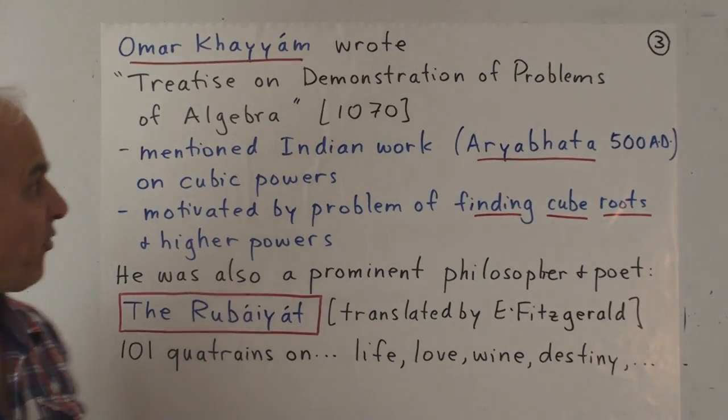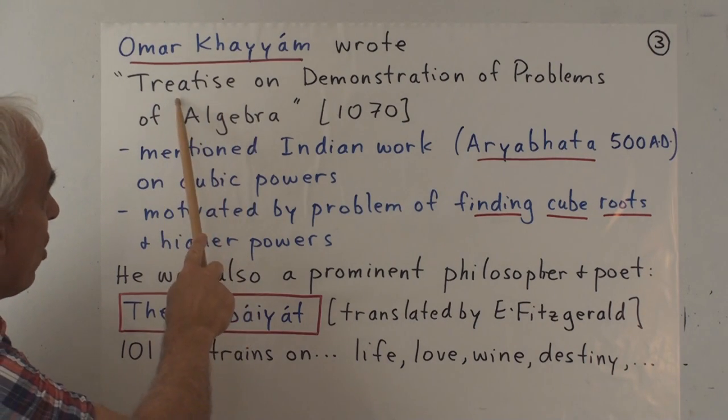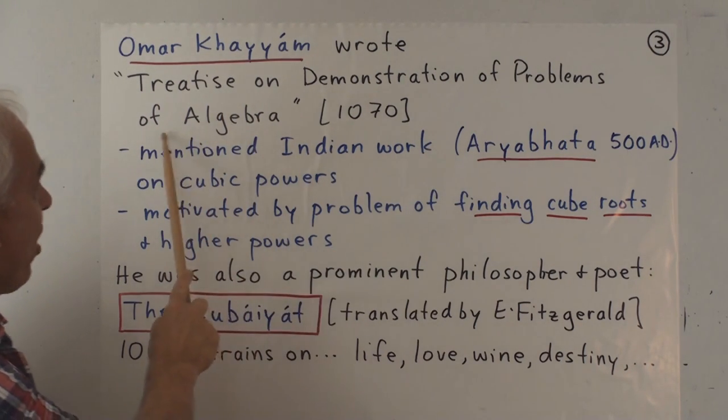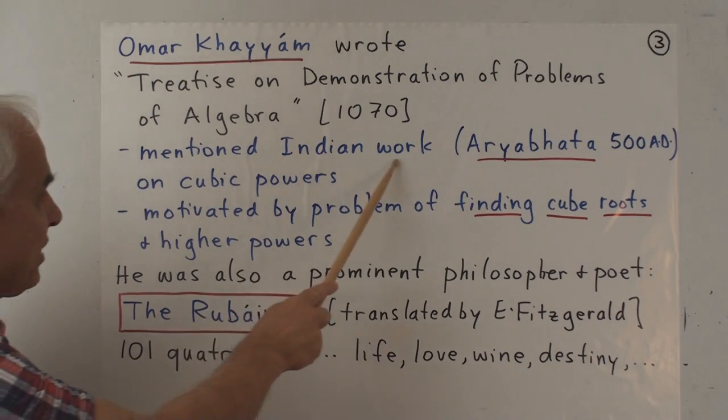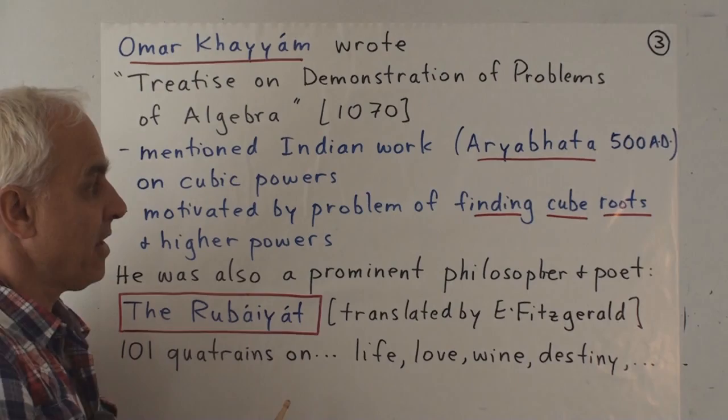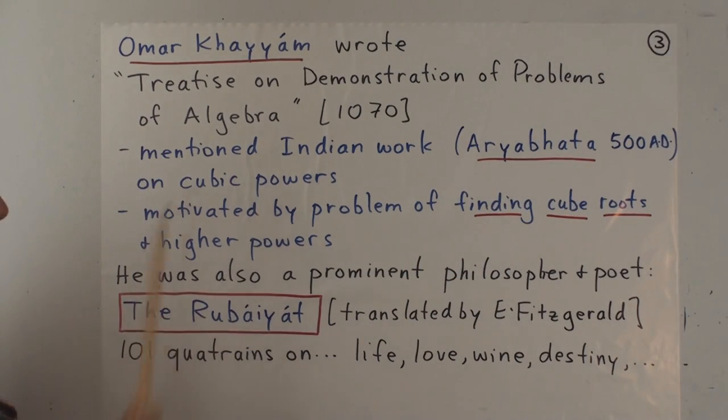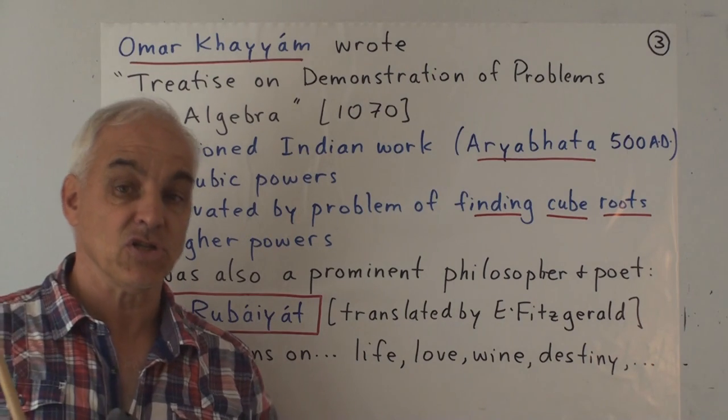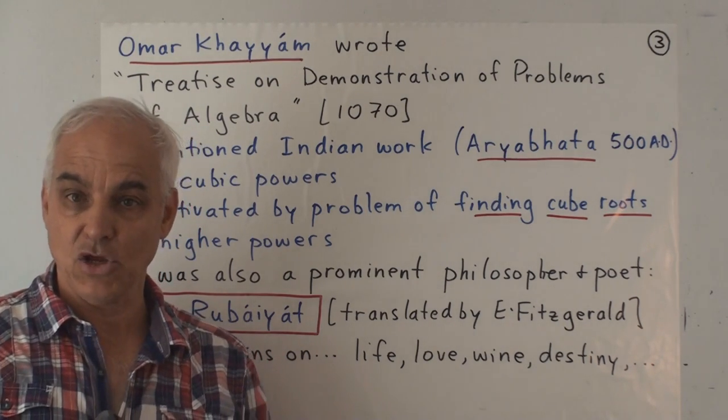So Omar Khayyam's work about this is contained in a book called Treatise on a Demonstration of Problems of Algebra, written in 1070. He mentioned here that the Indian work, about 500 or 600 years earlier, prominently Aryabhata, on cubic powers. So the Indian mathematicians knew at least how to expand a plus b cubed.